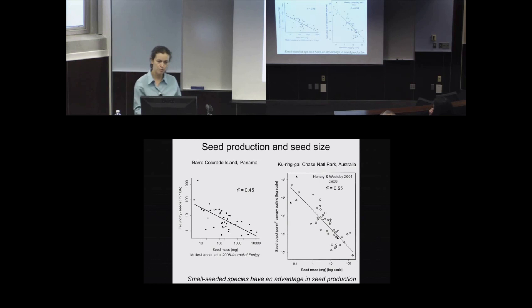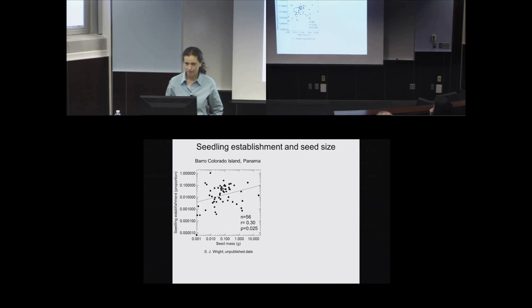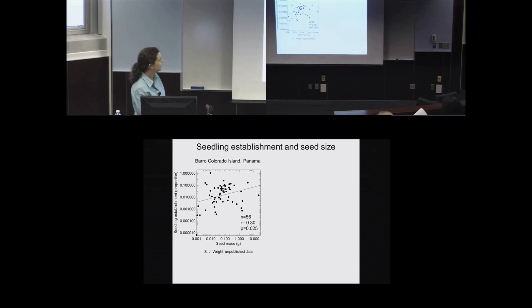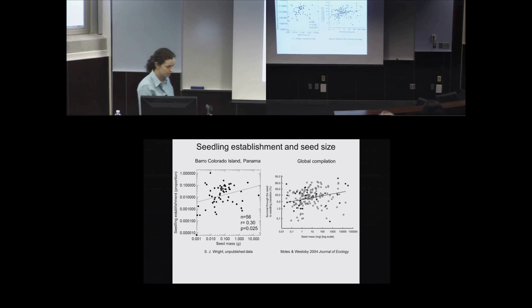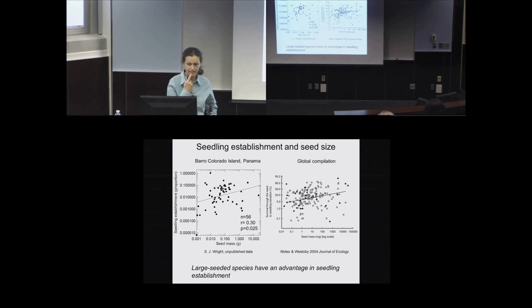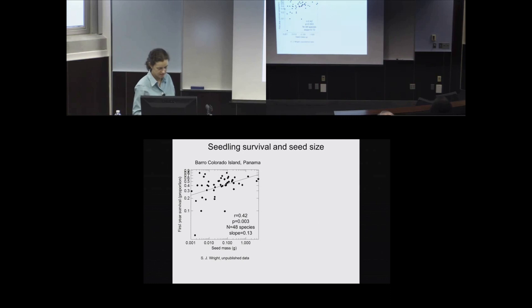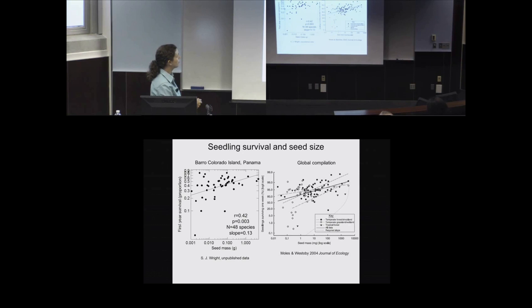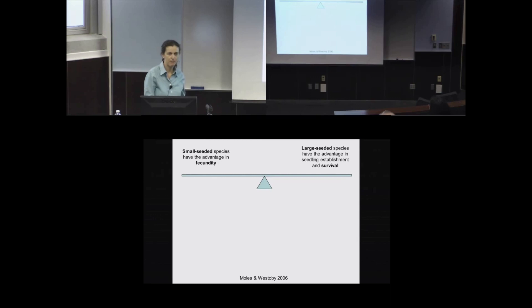If you look at seed mass versus the proportion of seeds that establish to become a seedling, there's a positive relationship across species, though considerably weaker. Large seeded species also have an advantage in seedling survival — there's a positive relationship between seed mass and first-year seedling survival both on Barro Colorado Island and in global compilations. So small seeded species have the advantage in fecundity, while large seeded species have the advantage in seedling establishment and survival.